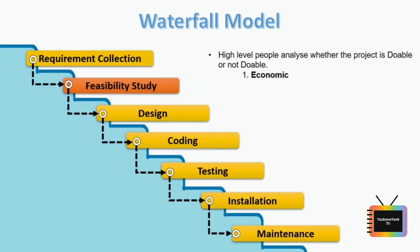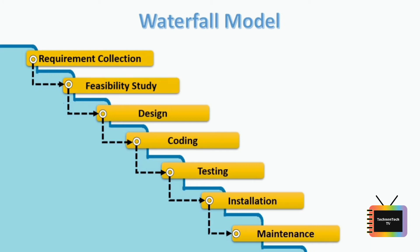An organization needs to check different aspects to develop the project. First is economic feasibility — can the organization complete the application within the given budget? Second is operational feasibility — can the organization create the operations expected by the customer? Third is technical feasibility — does the current computer system support the software? Last is schedule feasibility — can the project be completed within the given schedule? Once the feasibility study is done, we move to the design phase.